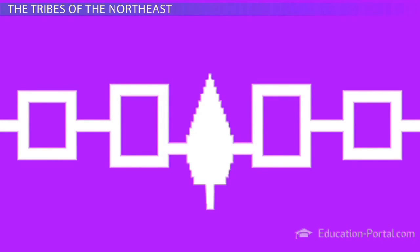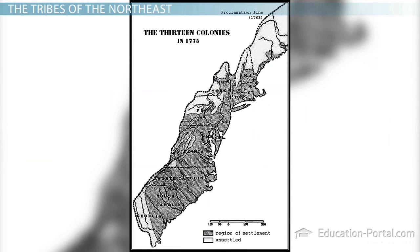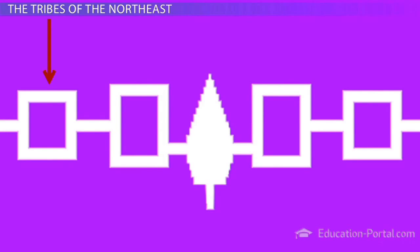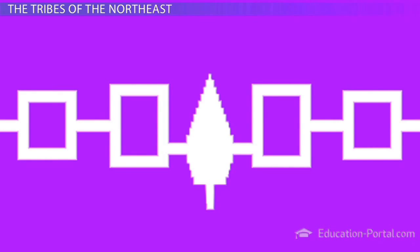The Iroquois League is quite famous because it is believed that the coming together of the 13 colonies was based on the coming together of this group, consisting of the Seneca, Cayuga, Onondaga, Oneida, and the Mohawk tribes. The League of the Iroquois was feared by all other tribes of the region.